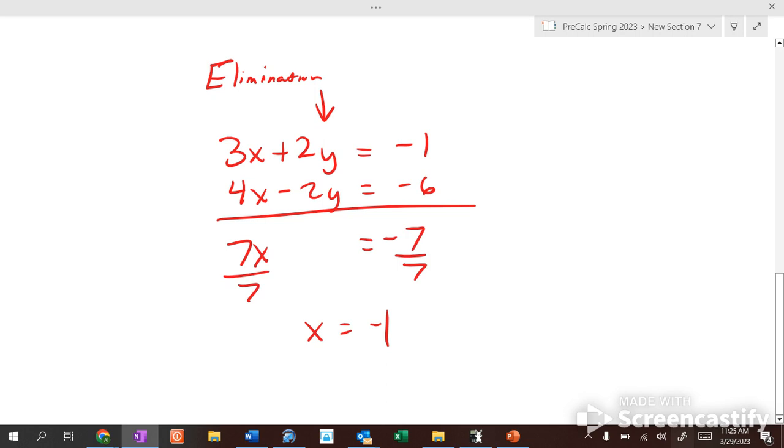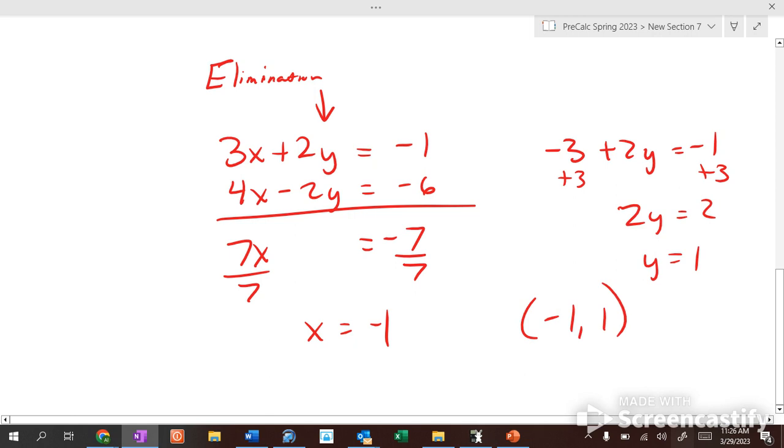That only gives me x. How do I find y? Plug it in. So we use substitution in the elimination method, it's just after the first step. So negative 3 plus 2y equals negative 1. We move this 3 over. We add 3. So 2y equals 2. So y equals 1. So (-1,1) is our solution.